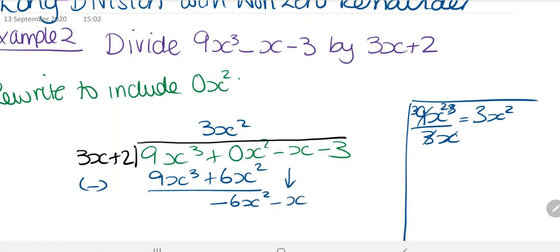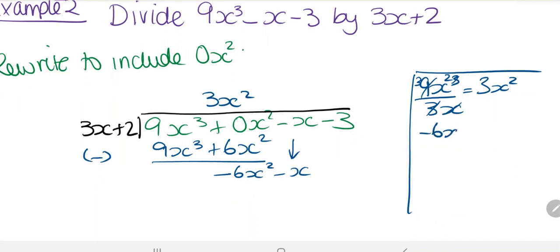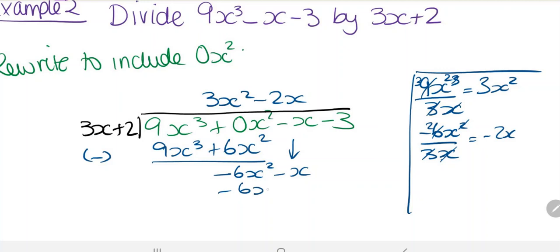We bring down minus 6x squared, so minus 6x squared divided by 3x gives us minus 2x. Multiplying back: minus 2x times 3x is minus 6x squared, and minus 2x times 2 is minus 4x. Since we're subtracting, those cancel to 0, and then minus x plus 4x gives us plus 3x.